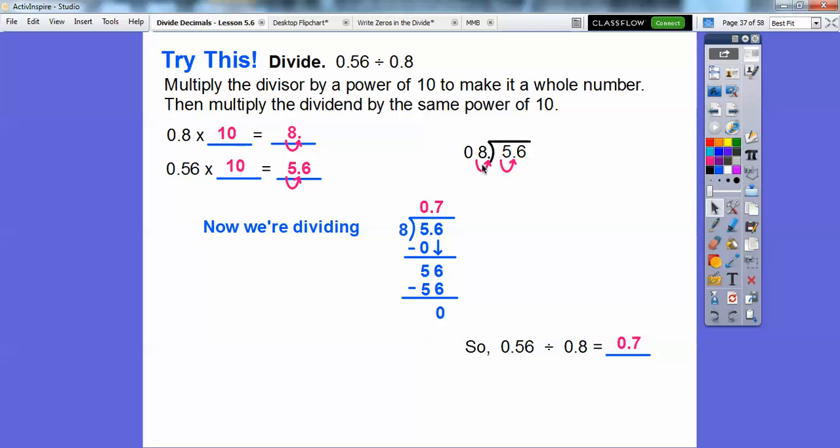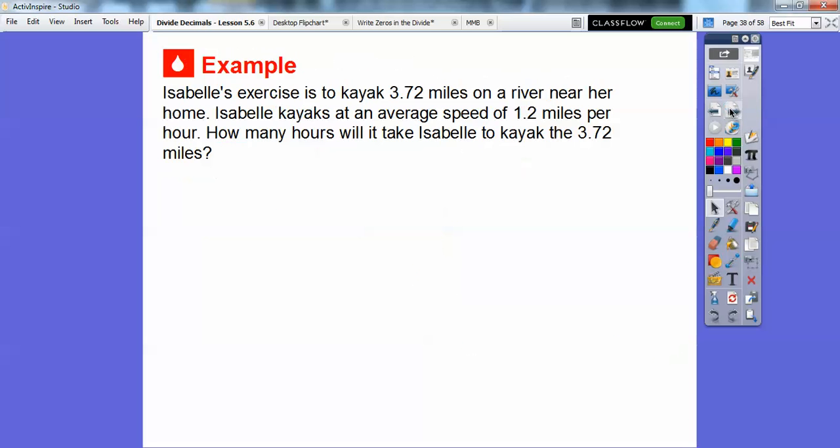So if you ever have a decimal out here, what you do is you just move it over. How many spots do you have to move it over? And that's what you have to do inside of here. You have to move it over that many spots also. And here we just multiplied them by 10. That made them move over right there.